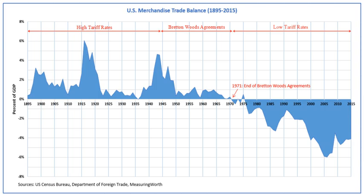Germany survived by forcing trading partners to purchase its own products. The US was concerned that a sudden drop-off in war spending might return the nation to unemployment levels of the 1930s, and so wanted sterling nations and everyone in Europe to be able to import from the US. Hence the US supported free trade and international convertibility of currencies into gold or dollars.